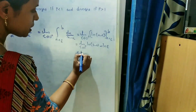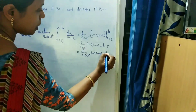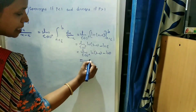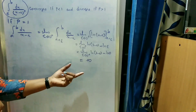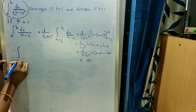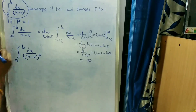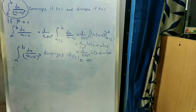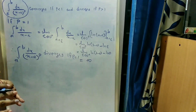This equals limit epsilon tends to 0 plus of log(b minus a) minus log(epsilon). Since log(0) is infinity, this expression becomes infinity. Therefore the integral diverges if p equal to 1. Combining both cases, the integral from a to b of dx divided by (x minus a)^p converges if p less than 1 and diverges if p greater than or equal to 1.